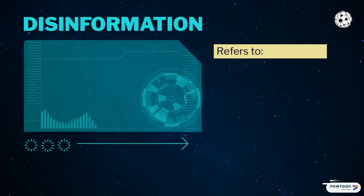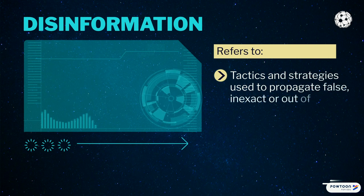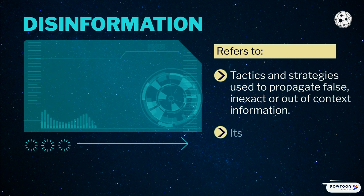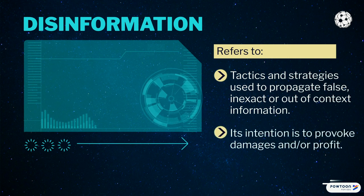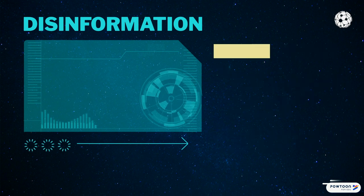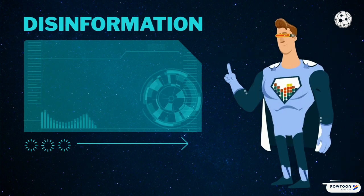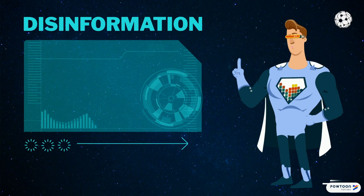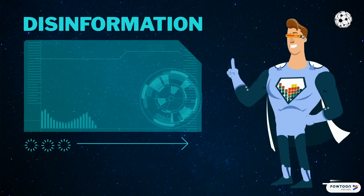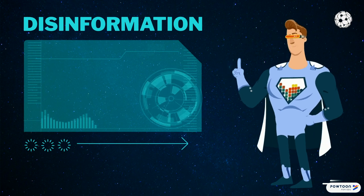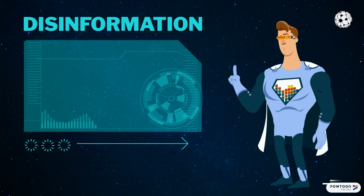Disinformation refers to an entire array of tactics and strategies used to propagate false, inexact, or out-of-context information, therefore hijacked from their real meaning. Its intention is to provoke damages and/or profit. Continuous disinformation can severely affect democratic processes, national security, and social cohesion. In the long run, it undermines citizens' trust in legitimate authorities, the democratic system, and the benefits of the information society, thus diminishing citizens' permeability to information, knowledge, and progress.